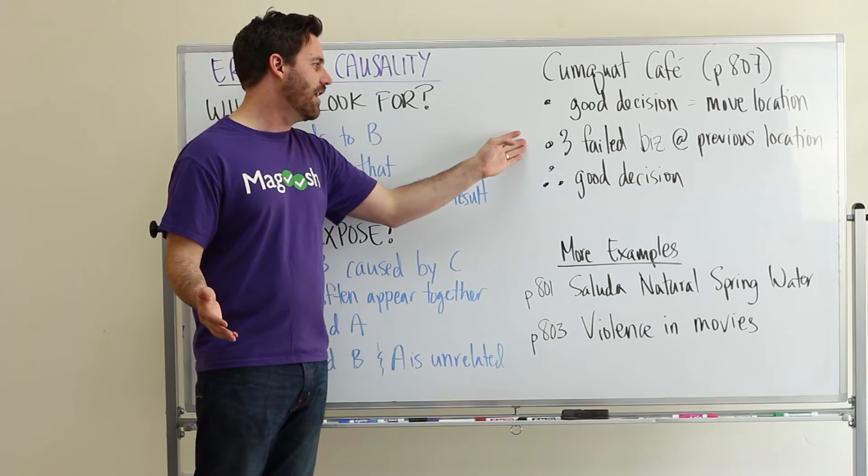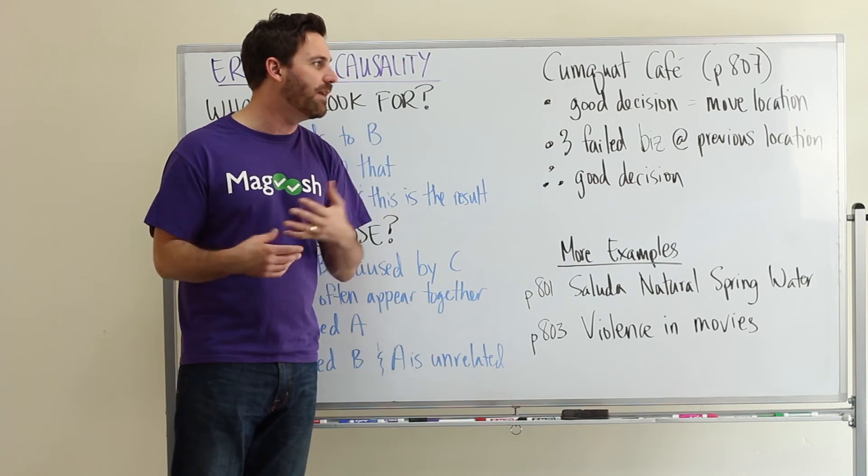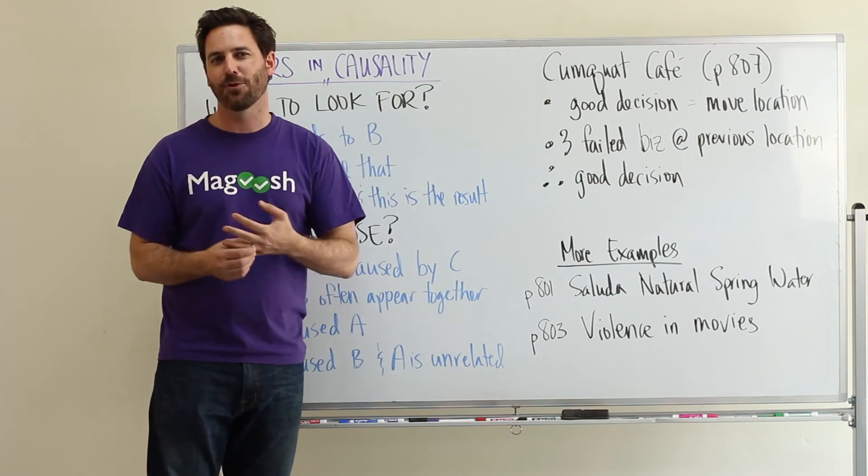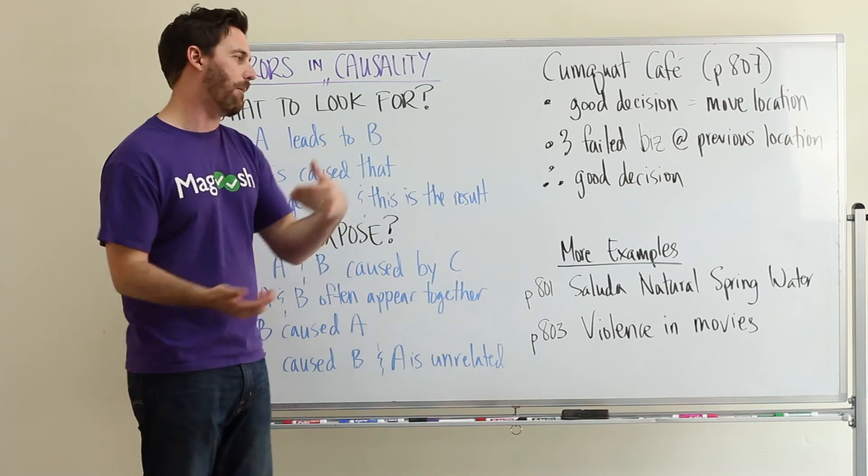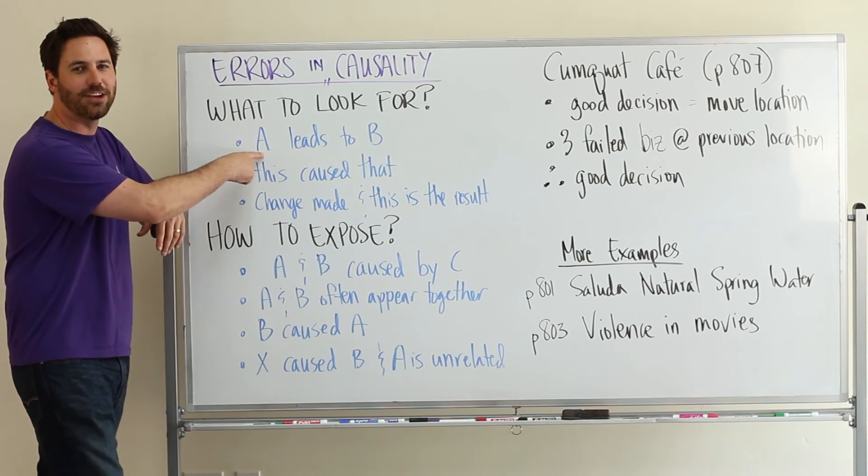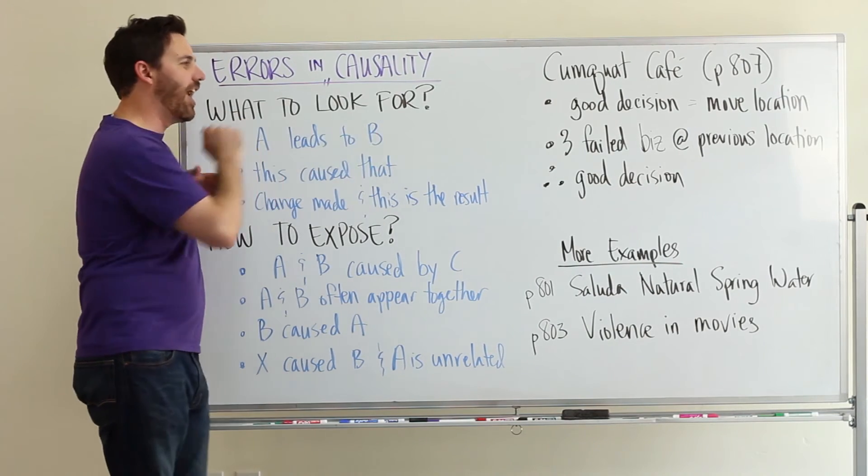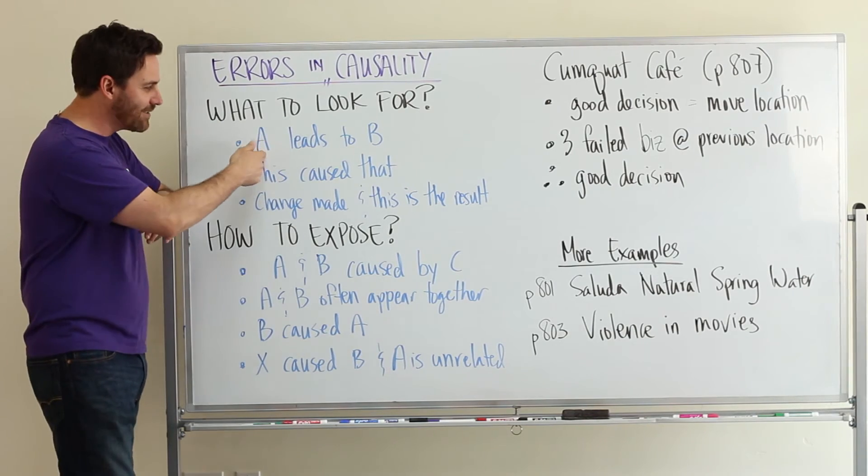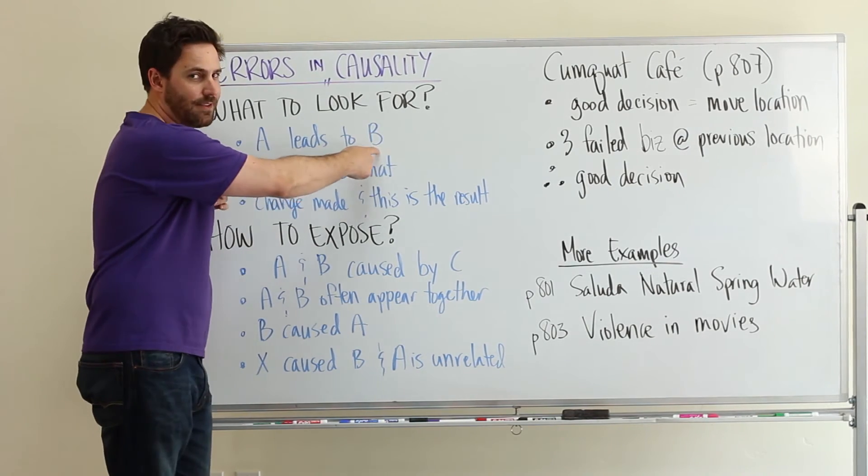They also say that there were three failed businesses at the previous location. And so, ultimately, Kumquat Cafe is a smart business. So, what they're saying is that by leaving the location, they are a good business. And they're also saying that this location led to three other businesses failing.